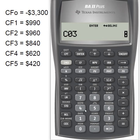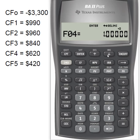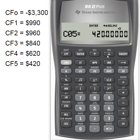Cash flow three: 840, enter, down. Cash flow four: 620, enter, down — again, just one, so down again. Cash flow five: 420, enter, down. Only one of those, and we hit down.